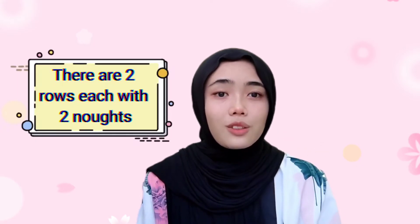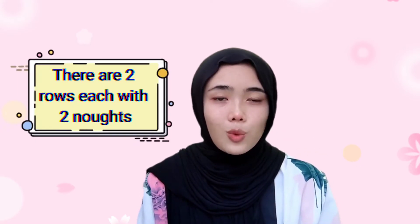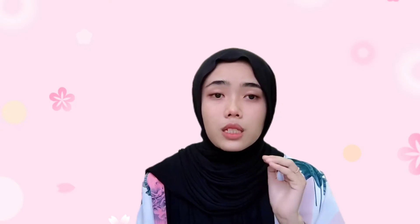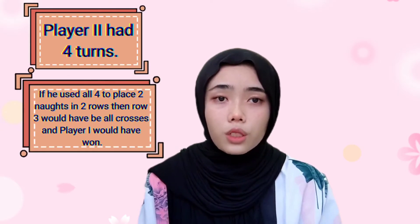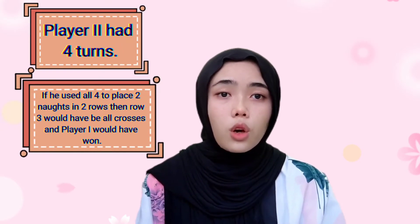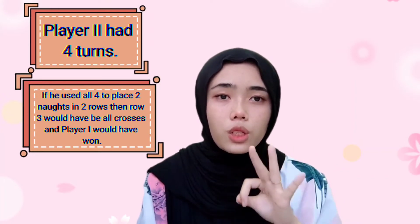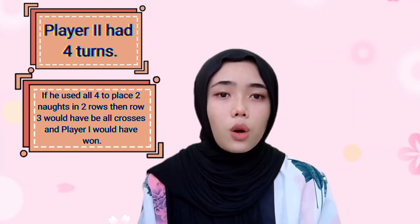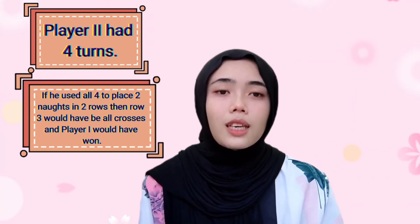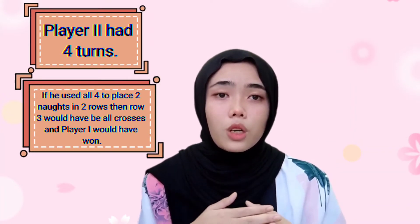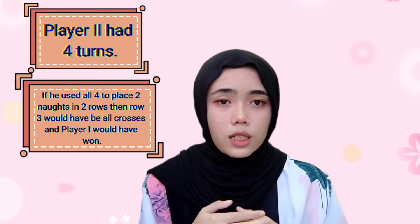The second question is: there are 2 rows each with 2 noughts. The statement is false because player 2 had 4 turns. If he used all 4 to place 2 noughts in 2 rows, then row 3 would be all crosses and player 1 would have won.